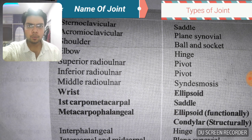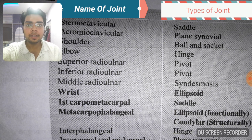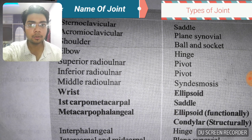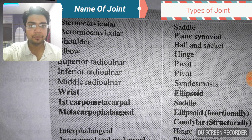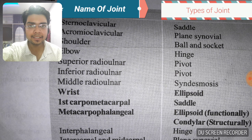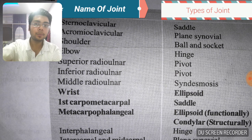Now one important MCQ — you must know the type of joint present between the sphenoid and the vomer. Most PG aspirants don't know this answer, but it is very important. It is schindylesis. So schindylesis is the type of joint present between the sphenoid and the vomer.